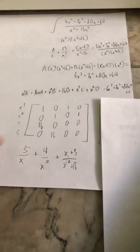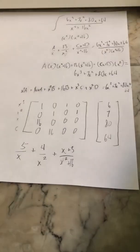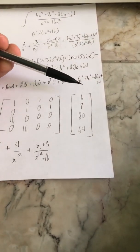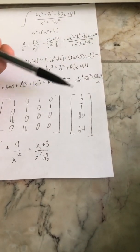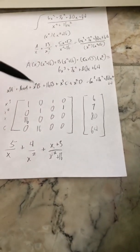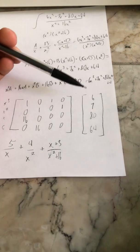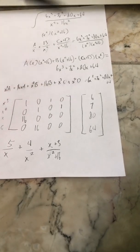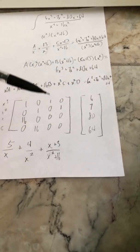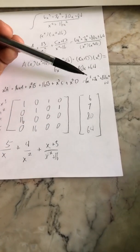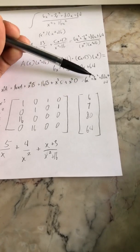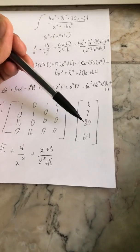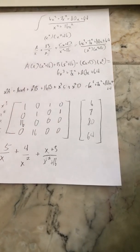Now I set up our second matrix, applying the same rules — the first row represents x cubed and we go down in descending order of power. So I put 6 in the first row, 7 in the second, 80 in the third, and 64 in the fourth.